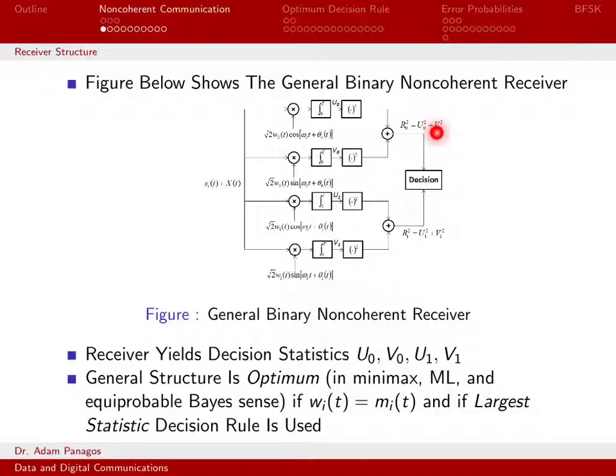Same type of thing down here except everything has a 1. We have a U of 1, a V of 1. We square them both, sum them. So we have a U1 squared plus a V1 squared. And that sum is what we call R1 squared.